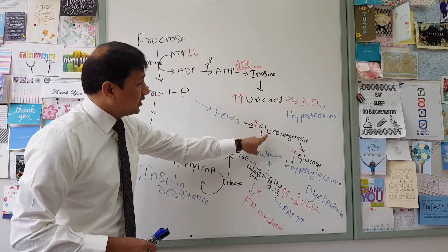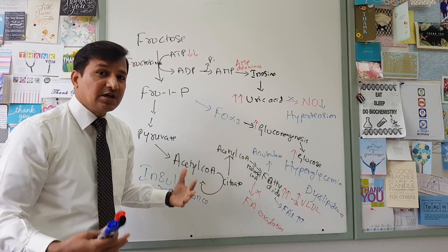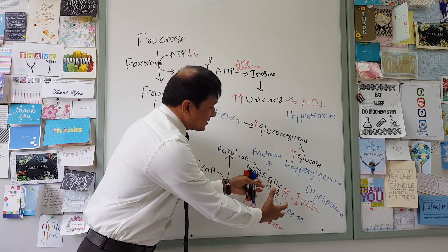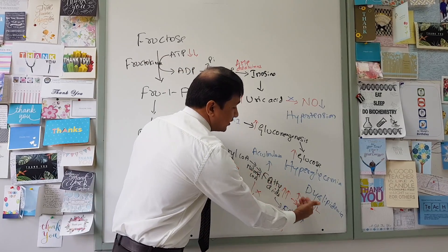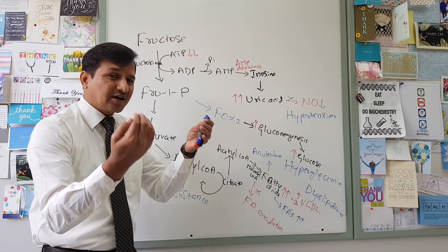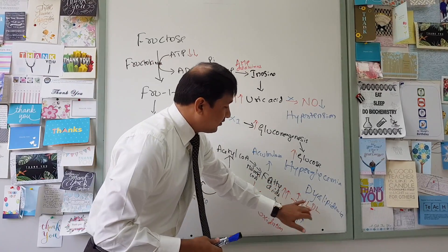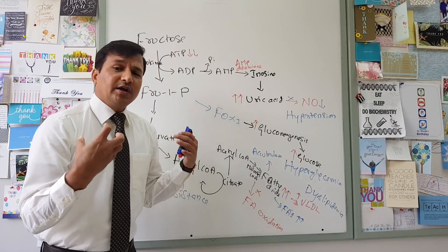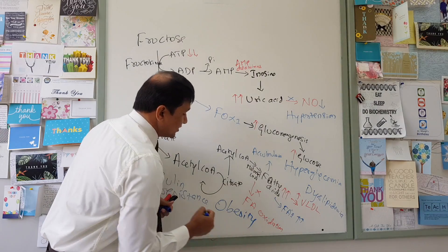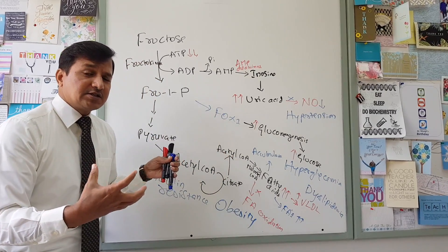Blood glucose remains elevated because skeletal muscles are resistant to insulin and cannot take up glucose. Combined with ongoing gluconeogenesis in the liver releasing even more glucose despite already high blood glucose levels, this further contributes to hyperglycemia. Meanwhile, excess VLDL delivers triacylglycerol to adipocytes — fat-storing tissues — causing adipocytes to increase in size, which gives rise to obesity.